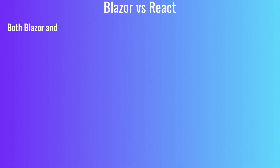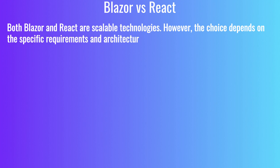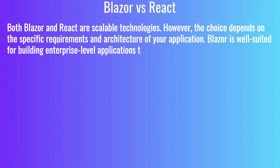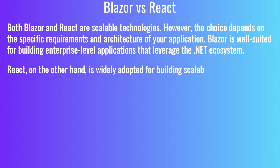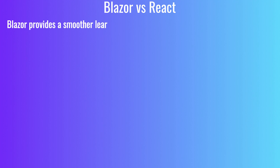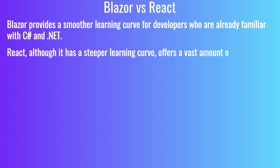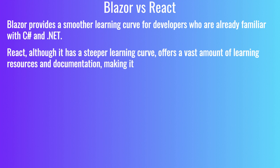Scalability: Both Blazor and React are scalable technologies. However, the choice depends on the specific requirements and architecture of your application. Blazor is well-suited for building enterprise-level applications that leverage the .NET ecosystem. React is widely adopted for building scalable web applications, and its ecosystem offers various solutions for scaling. Learning Curve: Blazor provides a smoother learning curve for developers already familiar with C# and .NET. React, although it has a steeper learning curve, offers a vast amount of learning resources and documentation, making it accessible to developers of various skill levels.